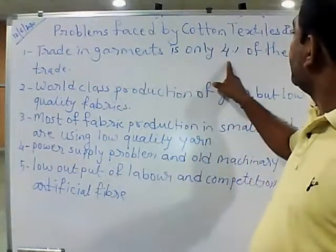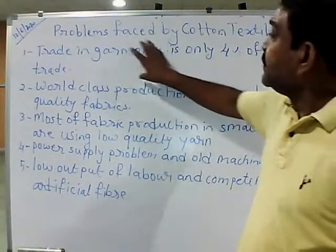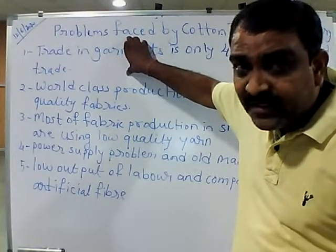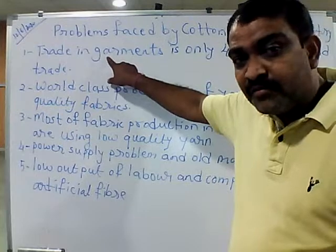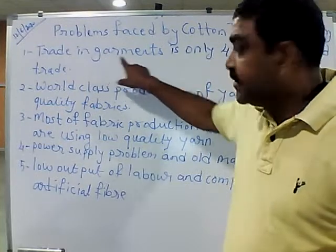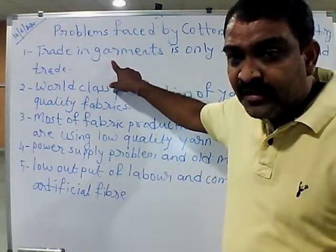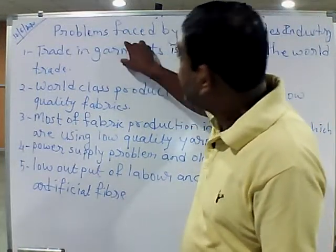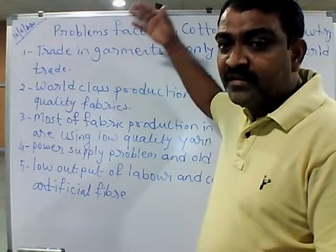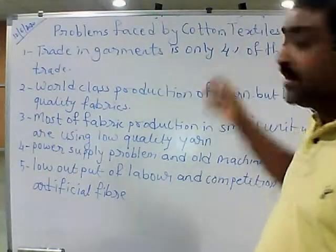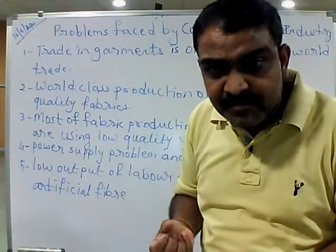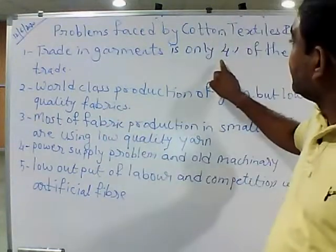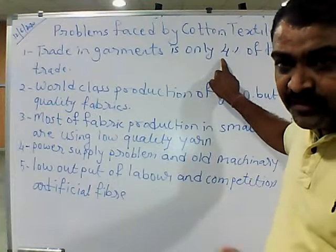Trade in garments is only 4 percent. The best opportunity to earn money is in the final product, which is garment. If we increase our garment trade and final product sales, we will get more income. And the problem of the textile industry is here — our trade is only 4 percent.